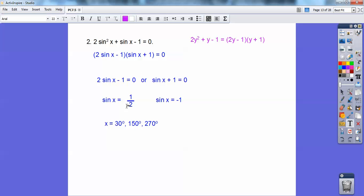So here I get sine of x equals a half, and I get x equals a half at 30 degrees and 150 degrees, and sine of x equals negative one at 270 degrees right there. So there's my choices for that one.